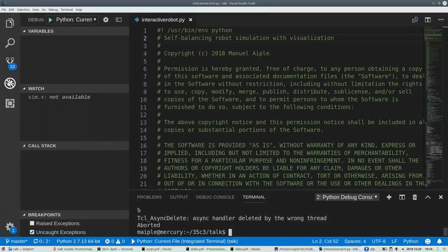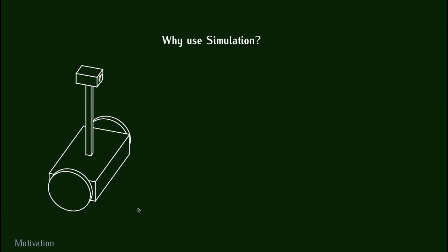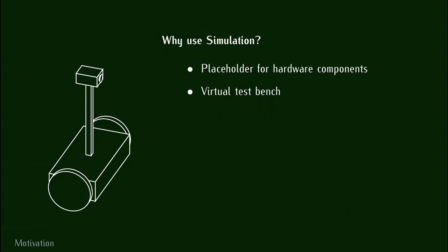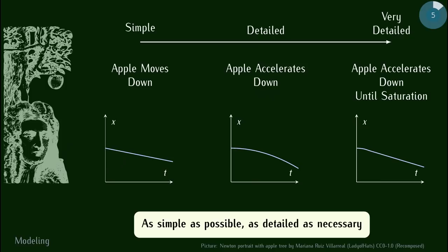The controller is the part that you will implement in software, and the hardware is what your friend will build. This is just one example of what you can simulate with the methods that we're going to see. To summarize the motivation, simulation can be used as a placeholder while the hardware is built, or it can be used as a virtual test bench, for example for scenarios where you don't necessarily want the real hardware because it's risky behavior and it can be damaged.